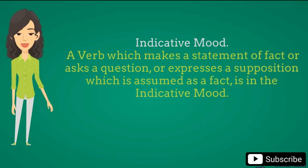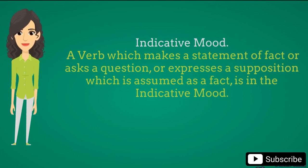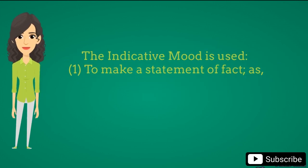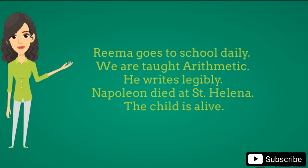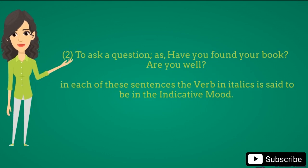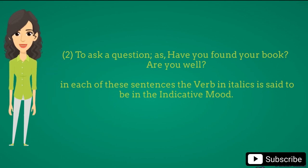Indicative mood: A verb which makes a statement of fact, or asks a question, or expresses a supposition which is assumed as a fact, is in the indicative mood. The indicative mood is used to make a statement of fact, as: Rima goes to school daily; we are taught arithmetic. To ask a question, as: Have you found your book? Are you well? In each of these sentences the verb is said to be in the indicative mood.